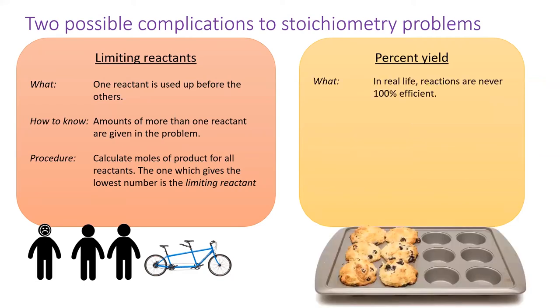Moving to percent yield problems, when a chemical reaction is performed in real life, it is rarely a hundred percent efficient. Sometimes the chemist will spill their materials. Other times there are side reactions which might occur to decrease the amount of product created.